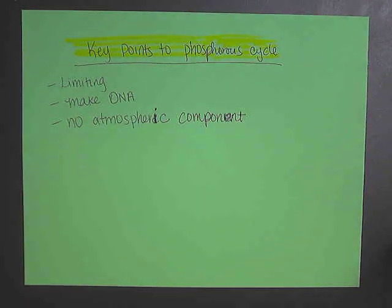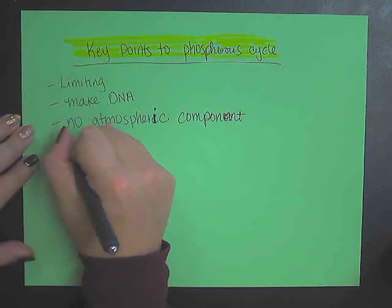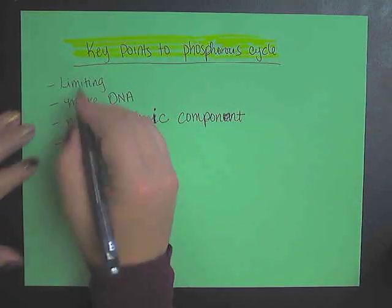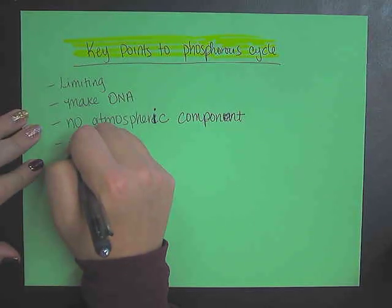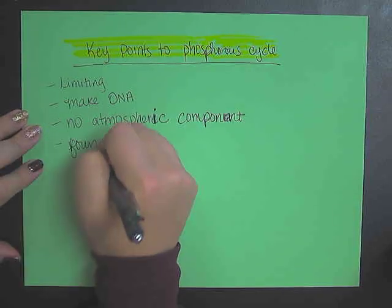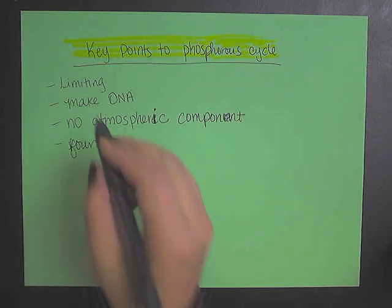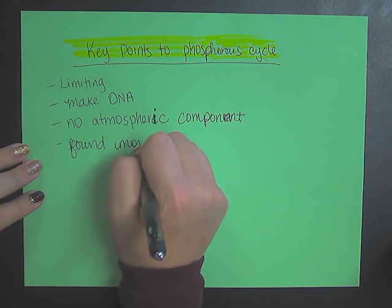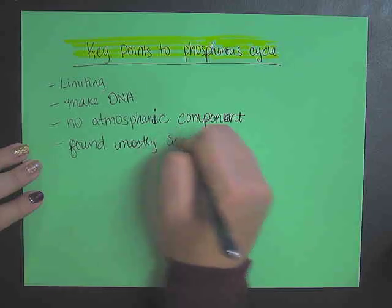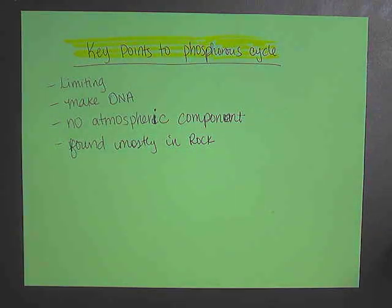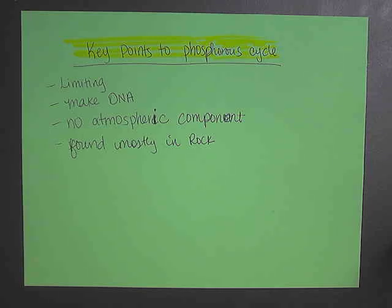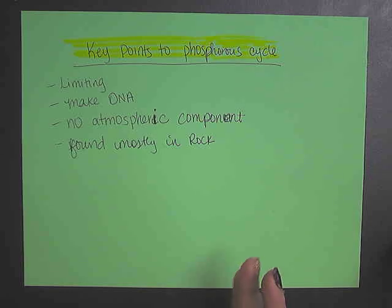You do need to know that phosphorus is typically going to be found in rock. So it does cycle, especially when rock gets broken down through erosion and when it dissolves. Found mostly in rock, and then as it dissolves, it'll end up in aquatic systems.